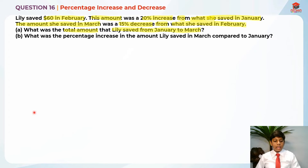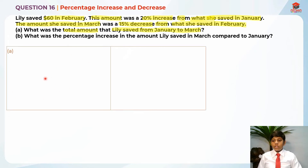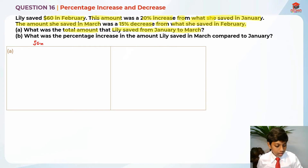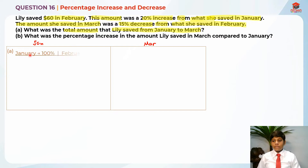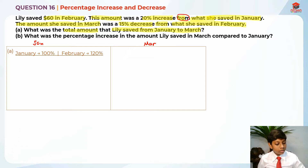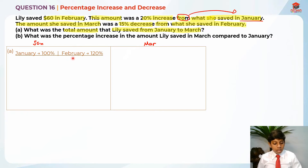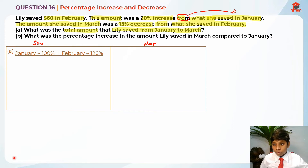Let me draw something like this. The first part is to find January and the second is to find March. So let's find January first. We know that January represents 100% because it's the base. The base comes from the word 'from' — 'from what she saved in January.' So what comes after that is the base, which is January. The base is always 100%, and with a 20% increase, February is supposed to be 120%.